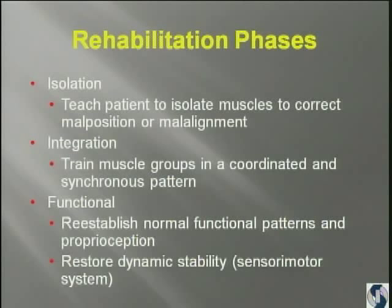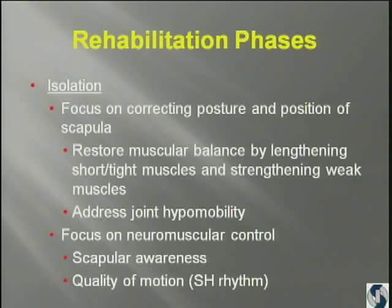The phases I look at are: first, teaching the patient to isolate the muscles; second, correcting the malposition or malalignment by re-establishing proper muscle length; then training the muscle groups in a coordinated and synchronous pattern; and finally re-establishing normal functional patterns, proprioception, and sensory motor training. In the isolation phase, the key is to correct posture and scapular position, restore muscle balance, address hypomobility — especially thoracic hypomobility — and focus on neuromuscular control, scapular awareness, and scapulohumeral rhythm.